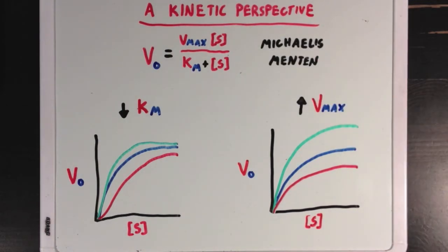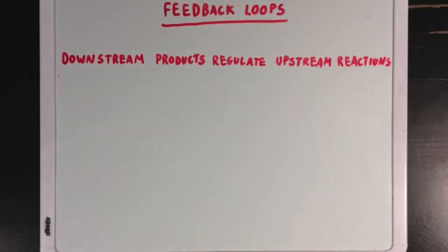Now that we've talked about activators and inhibitors, let's introduce the idea of the feedback loop. The basic idea is that a feedback loop is when you have downstream products regulating upstream reactions. I understand this can be a mouthful, so let me show you this little reaction sequence,